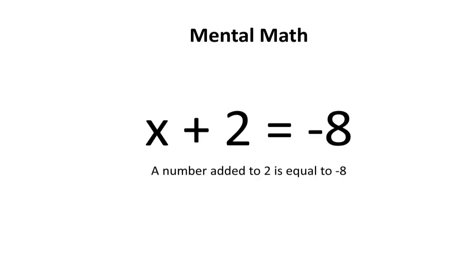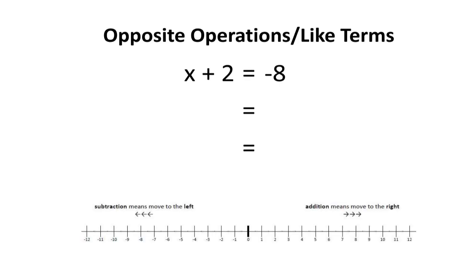In our last example, a number added to 2 is equal to negative 8. In other words, x plus 2 equals negative 8. What could this number be? Using mental math to find the value of x would be quite difficult, since these are unfriendly numbers — there are some negative numbers here. Therefore, I would highly recommend using the technique we are learning today. Look at the equation x plus 2 equals negative 8. You'll notice that these two terms are like terms, since they're both just numbers. Like terms like to be together, which means you can bring the positive 2 over to the negative 8, or you can bring the negative 8 over with the positive 2.